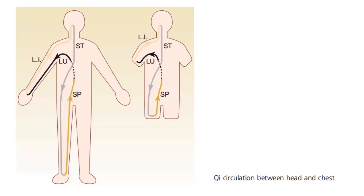Here is an illustration of Qi circulation between the head and the chest. An example of the yin channel is the lung, which is supposedly flowing down to the arms. But if we imagine it without the arms, it goes up to the head as it connects with its yin-yang pair, which is the large intestine. The stomach channel, which is supposed to be going down to the legs, goes back up to the chest by its yin-yang pair, which is the spleen.